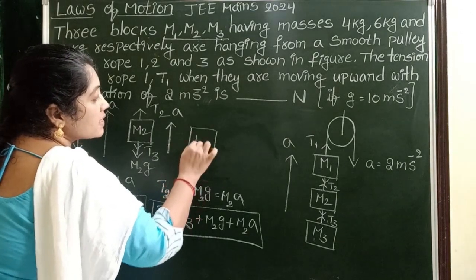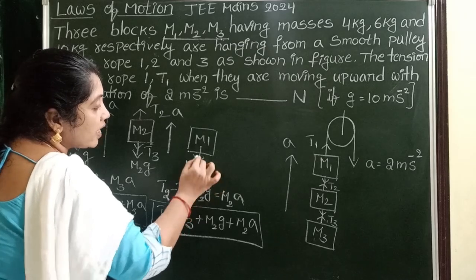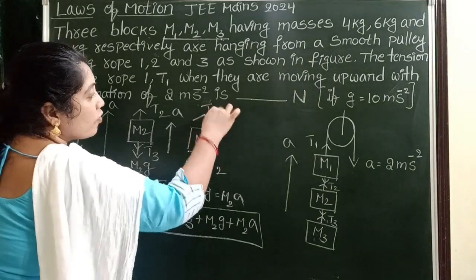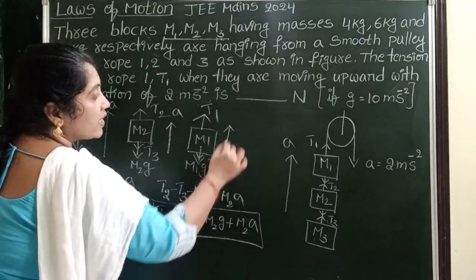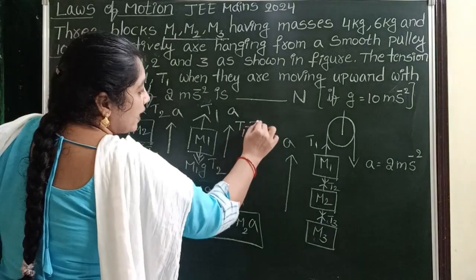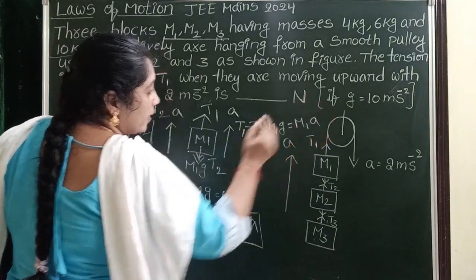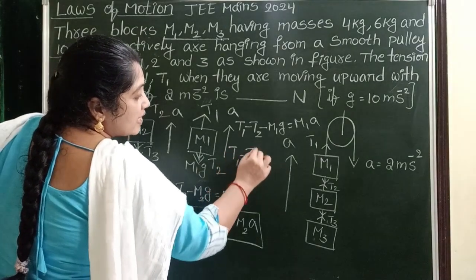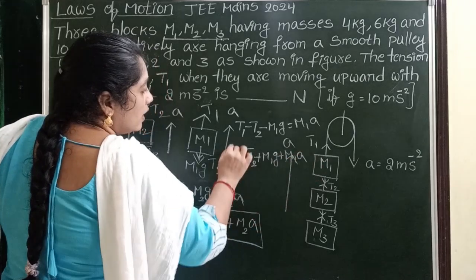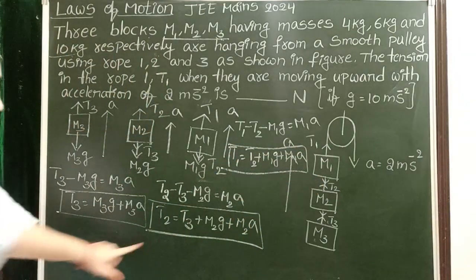Now the first block of mass M1. Weight M1G is acting in the downward direction, and the downward pulling force is T2. The upward tensional force is T1, with acceleration in the upward direction. So: T1 − T2 − M1G = M1A, therefore T1 = T2 + M1G + M1A. This is the formula to calculate the tensional force T1.